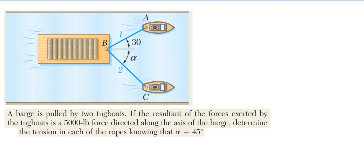So with this particular problem that we have here, we are going to solve this by the parallelogram method. We have a barge that is being pulled by two tugboats as shown. If the resultant of the forces exerted by the tugboats is 5,000 pounds directed along the axis of the barge, meaning in that direction, determine the tension in each of the ropes knowing that alpha is 45 degrees.